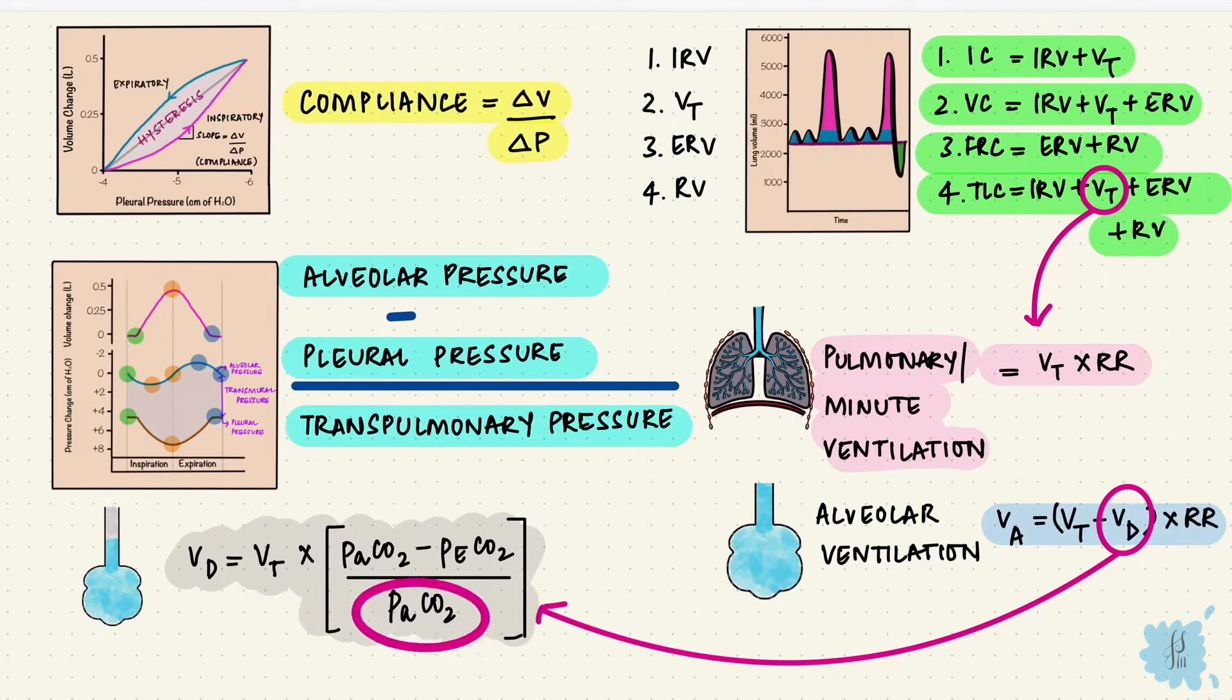Alveolar carbon dioxide and arterial carbon dioxide can be predicted with the alveolar ventilation equation, which is that alveolar carbon dioxide is the rate of carbon dioxide produced into k, which is a constant, over the alveolar ventilation rate.